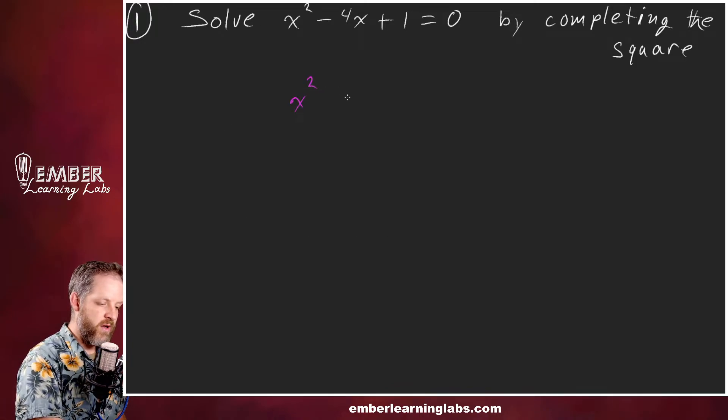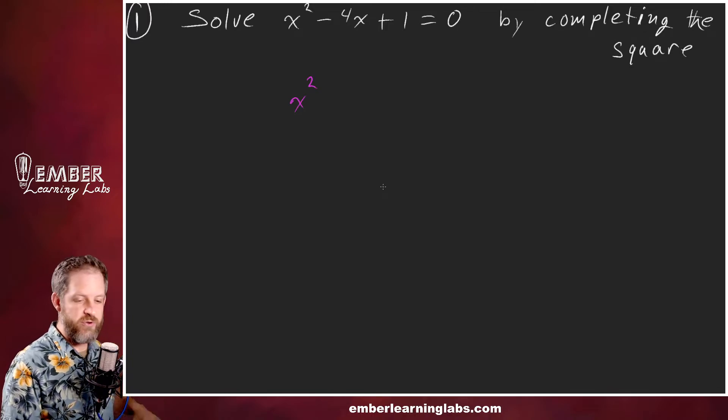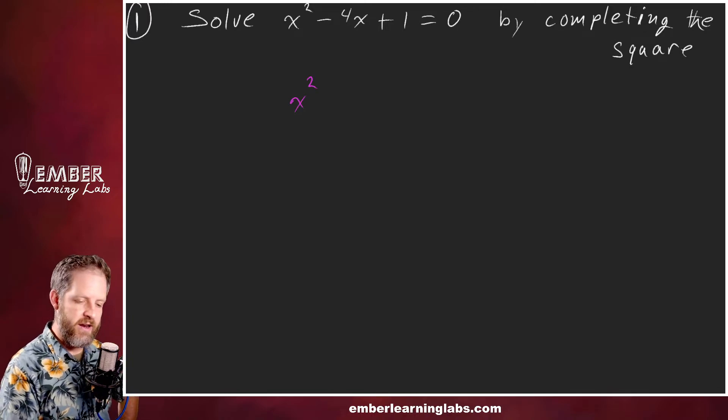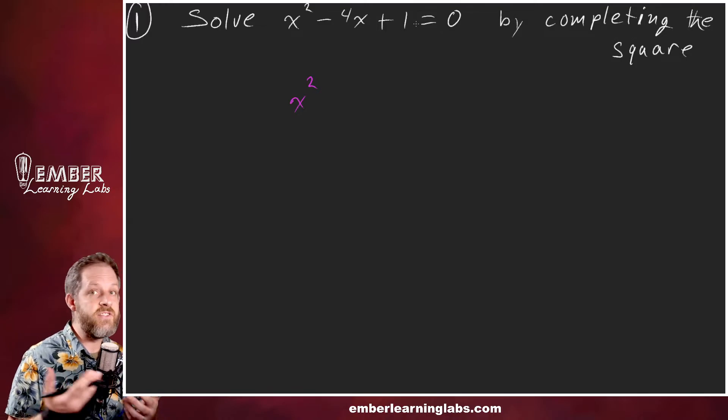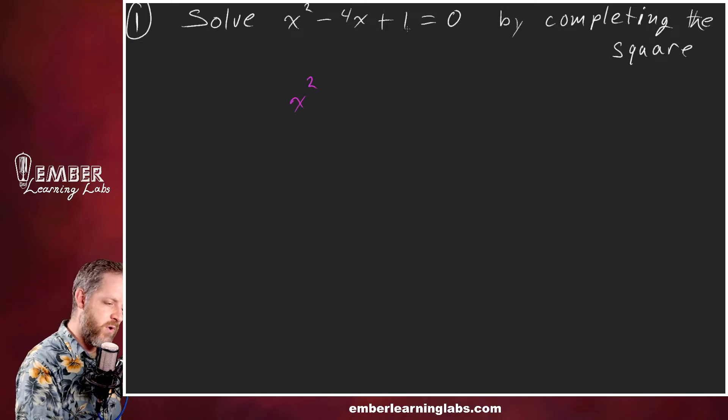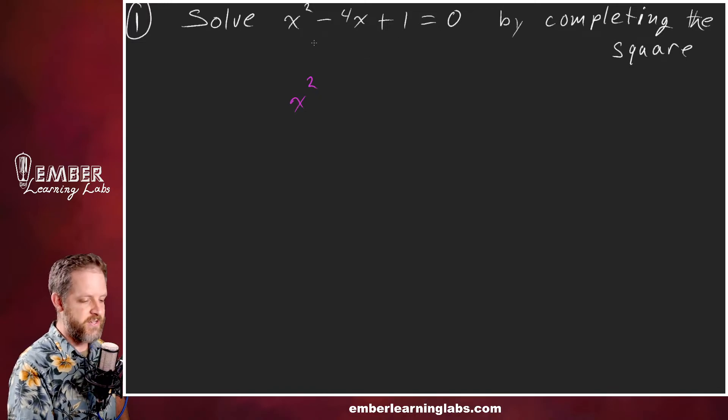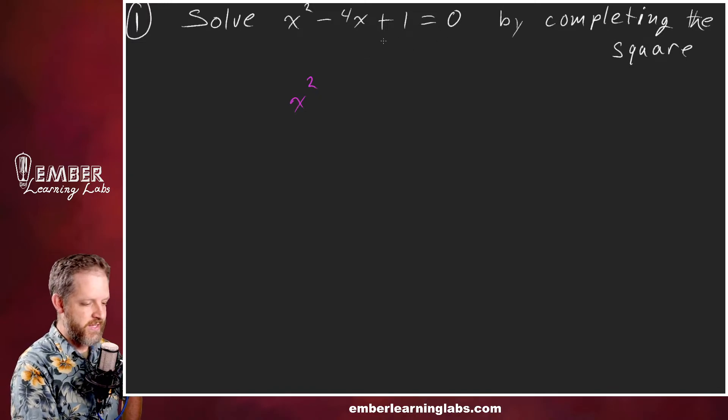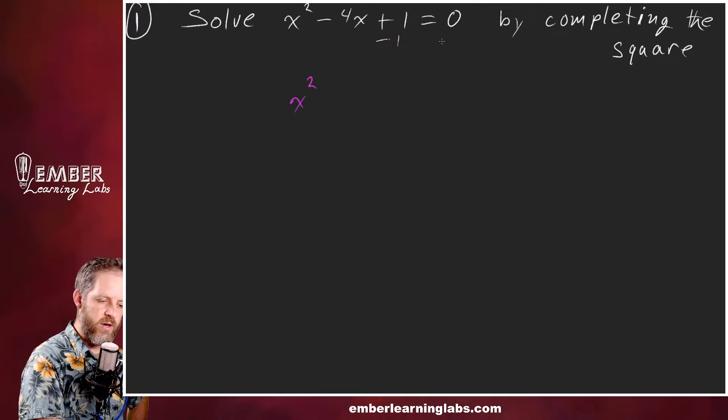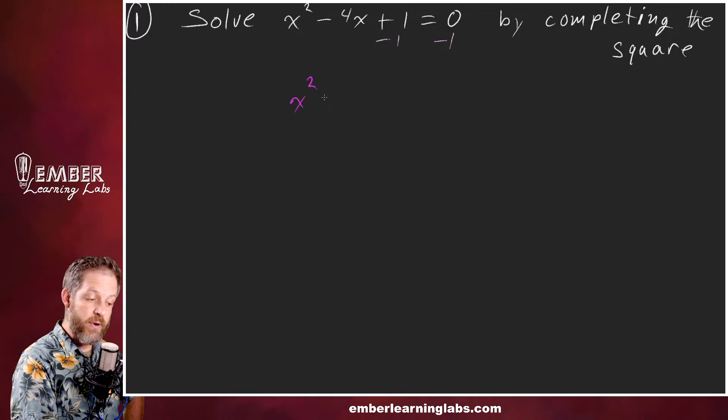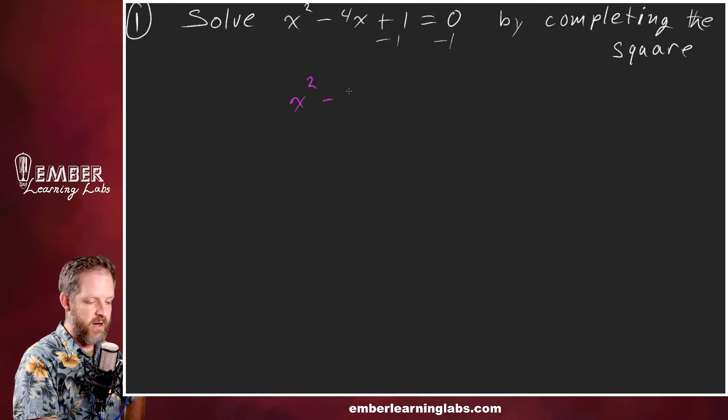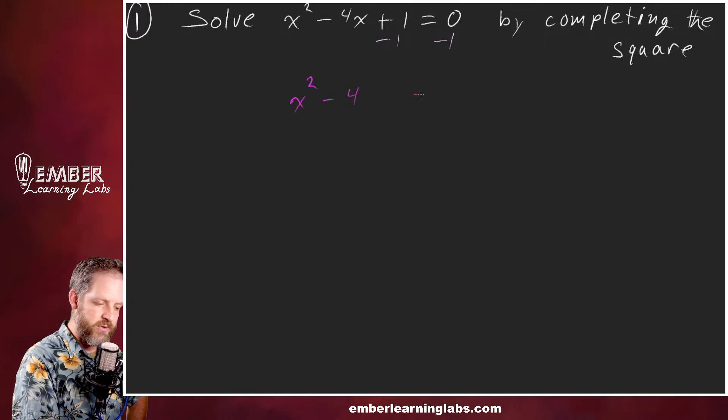X squared. Step one, let's do step one. Unlike factoring, instead of wanting everything on one side and zero on the other, we actually want this C term, the constant term, over on the other side. So we're going to subtract one from both sides, and when we rewrite it as x squared minus 4x equals negative one.